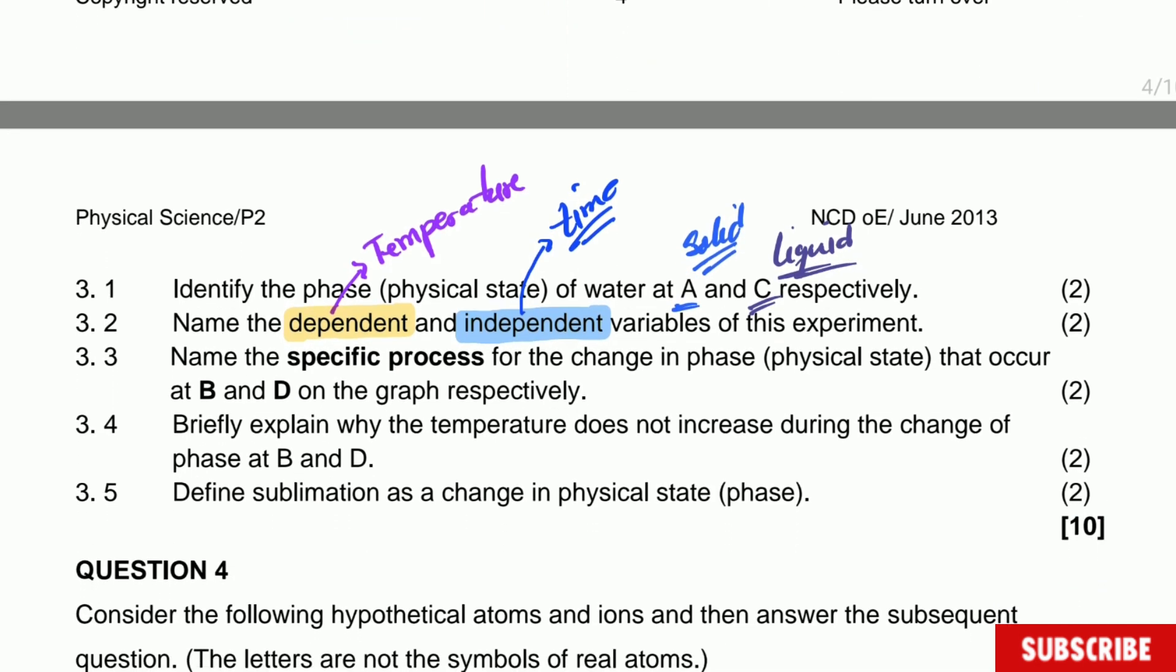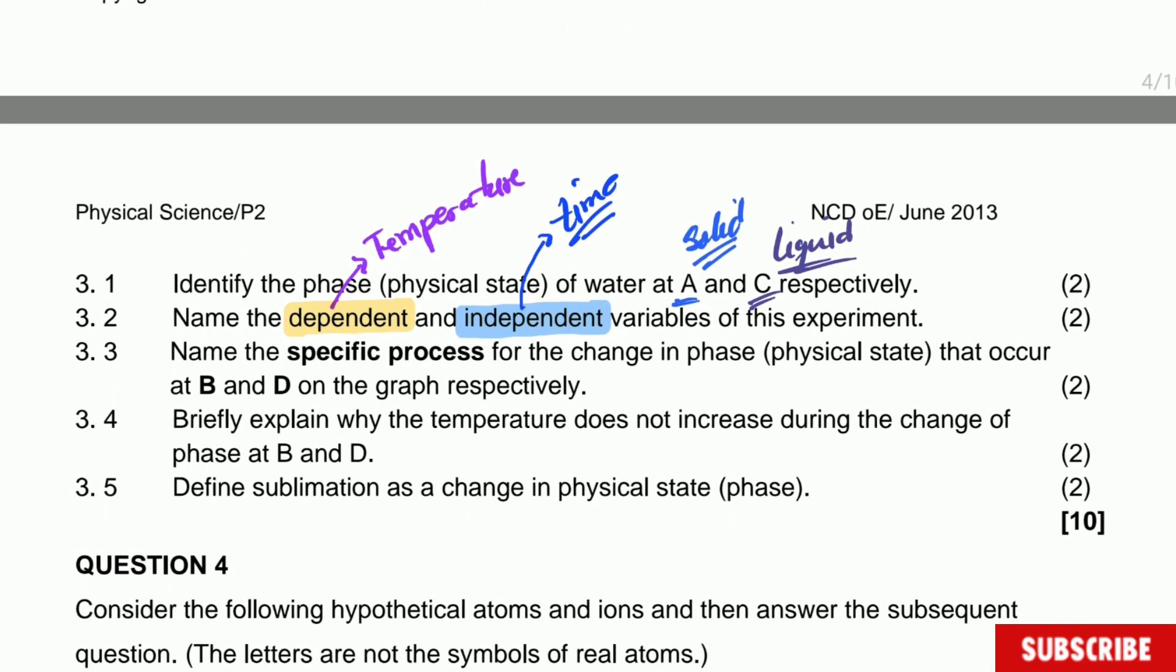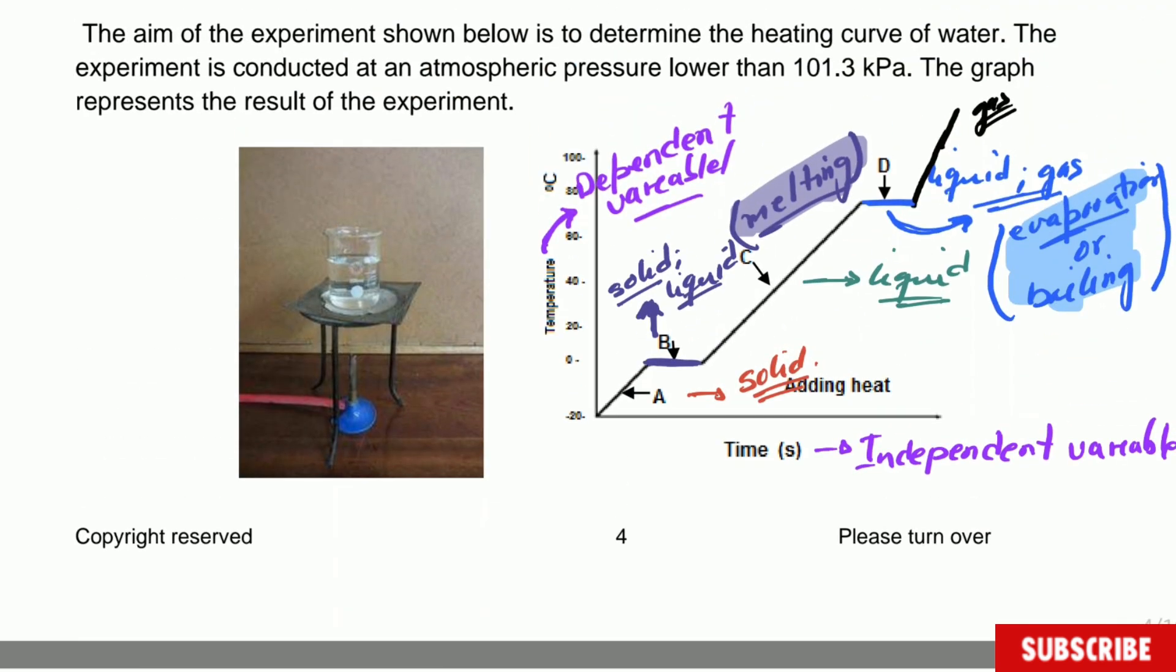Now we have only one more question which says define sublimation as a change in a physical state. So what is sublimation? Sublimation is a process whereby a solid changes directly into a gas. Now what I want to mention is that the word directly is very important because during this process it doesn't go into liquid. It goes from solid straight into gas. For example, carbon dioxide is like that. The dry carbon dioxide or the solid carbon dioxide is dry ice, and carbon dioxide doesn't go into liquid before it goes to gas. It goes straight from dry ice to gas.